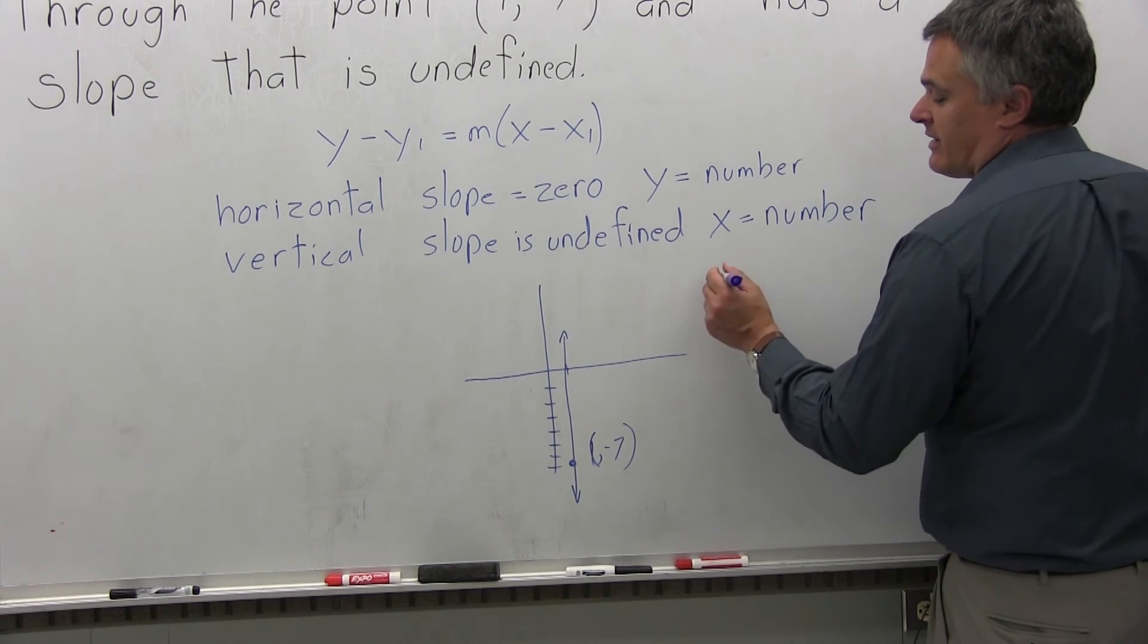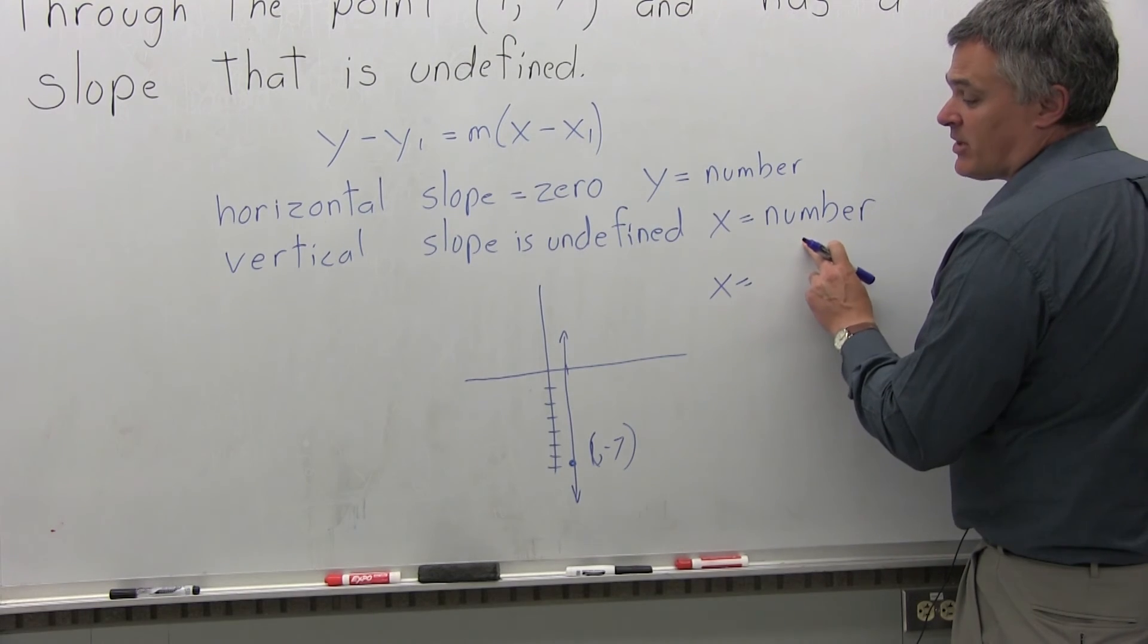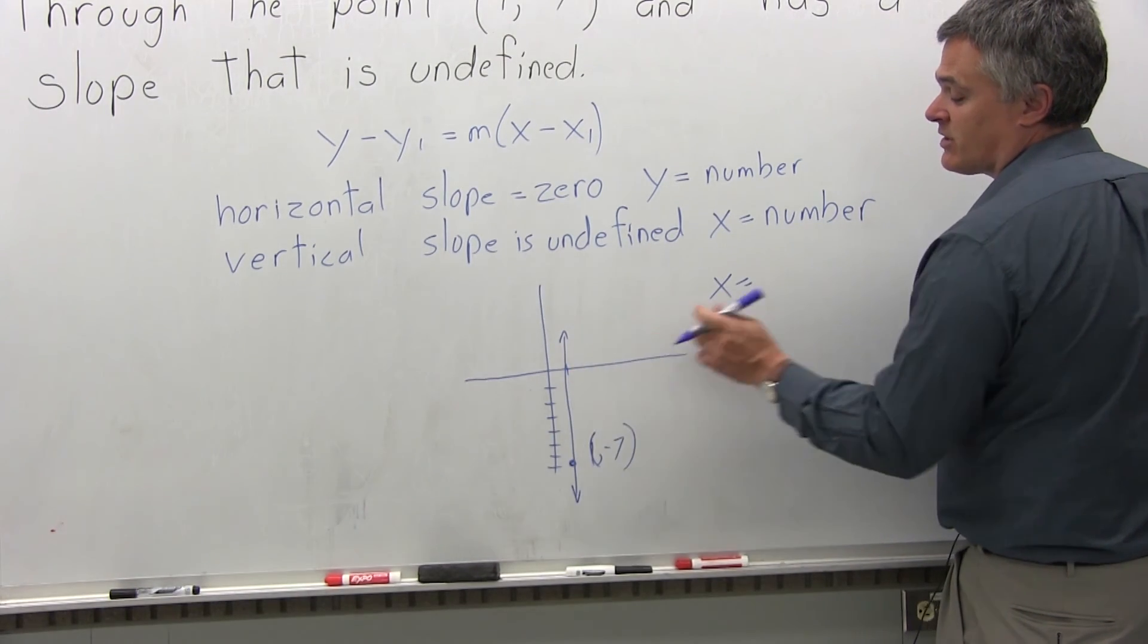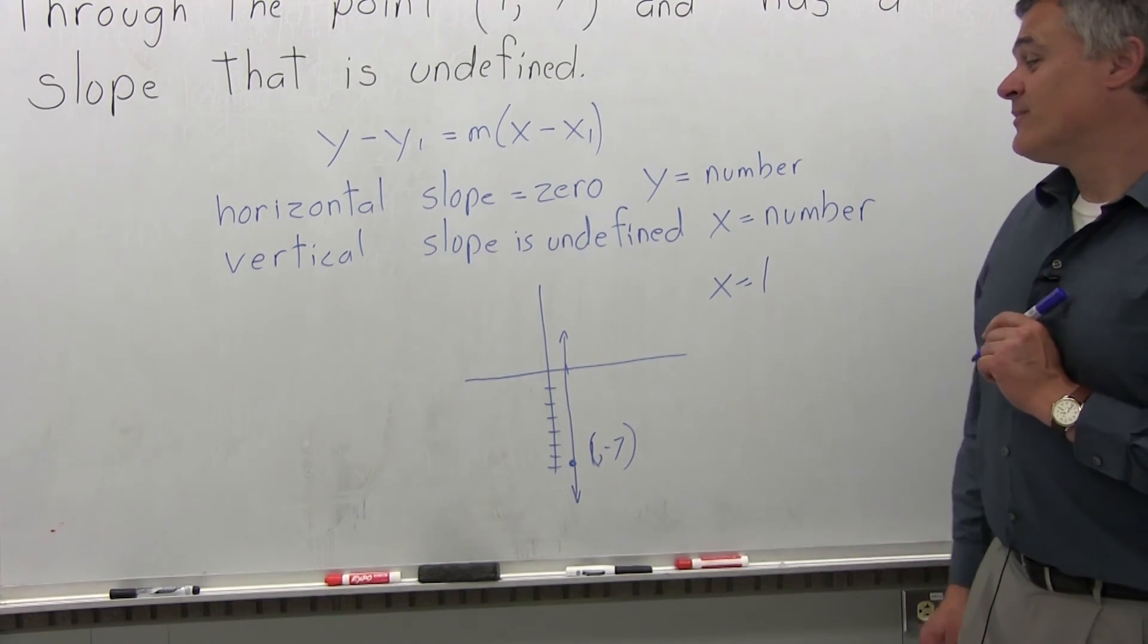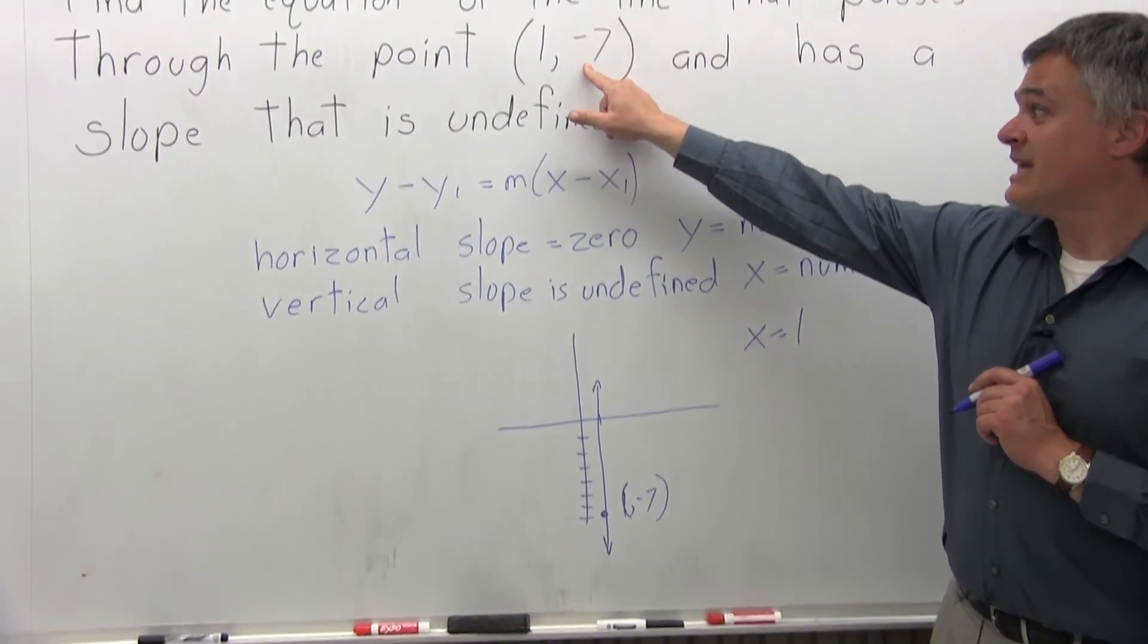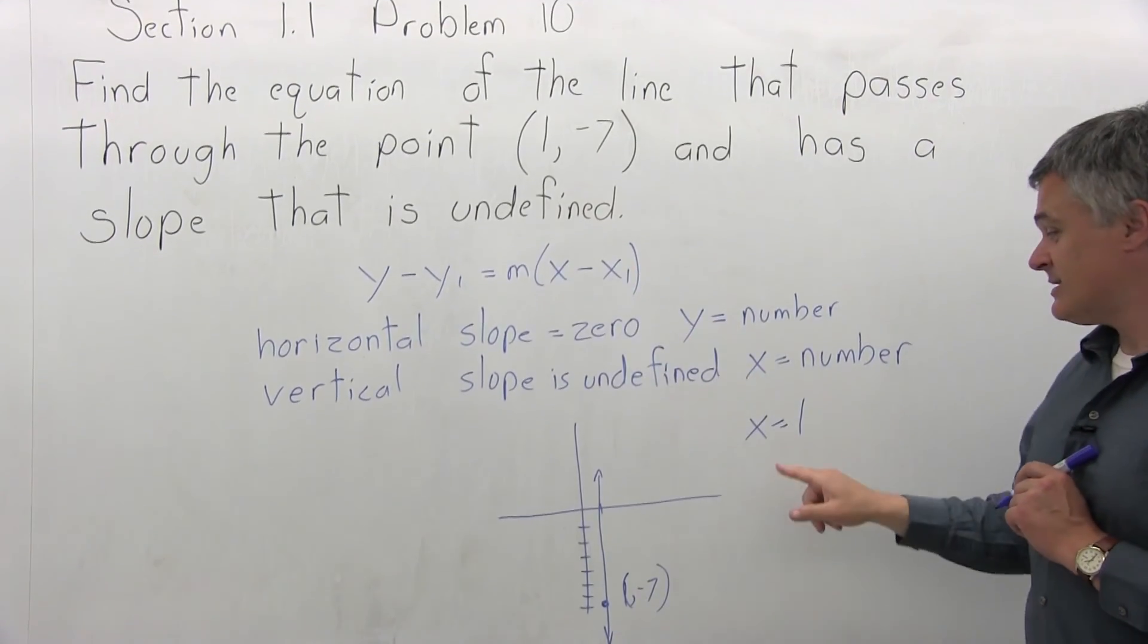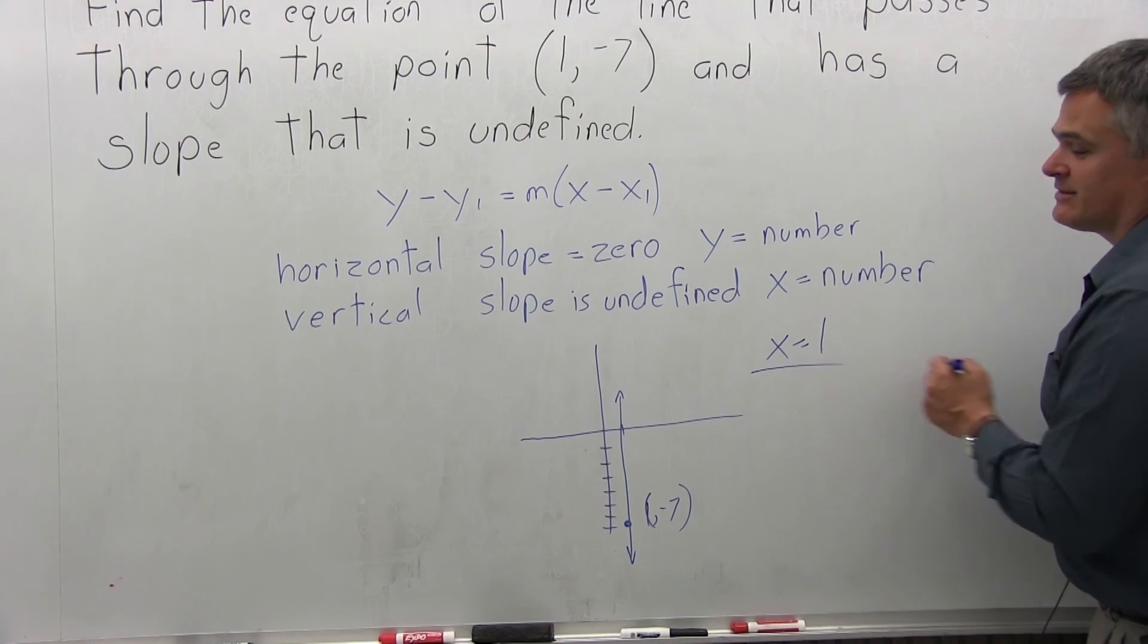So that's what it looks like, and it's going to have the form, as it's written here, x equals a number, is the form for all vertical lines. And the number is the position of the vertical line, in this case, 1. So the equation of the line that passes through the point (1, -7) and has a slope that is undefined is this vertical line with the equation x = 1. That's the answer.